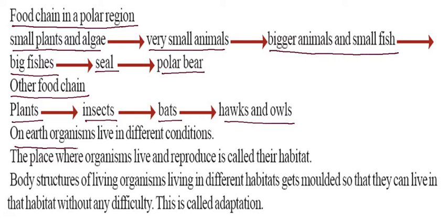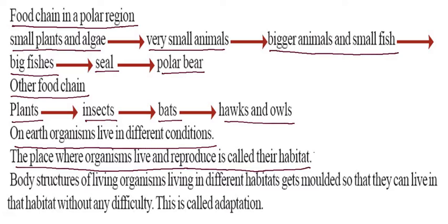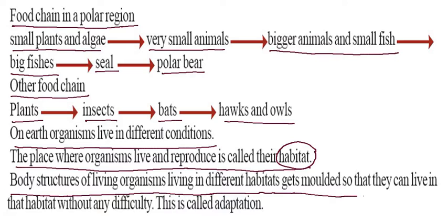On Earth, organisms live in different conditions. The place where organisms live and reproduce is called their habitat. The body structures of living organisms living in different habitats get modified so that they can live in that habitat without any difficulty. This is called adaptation.